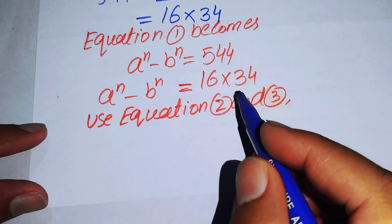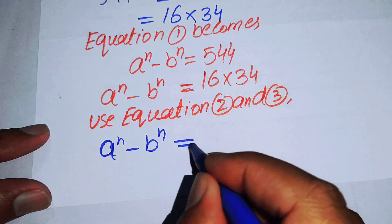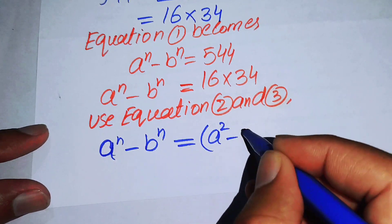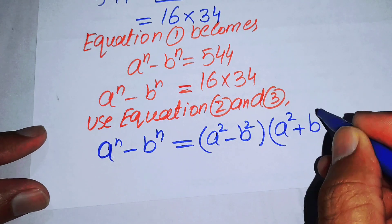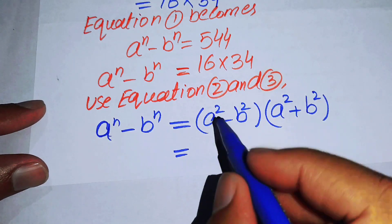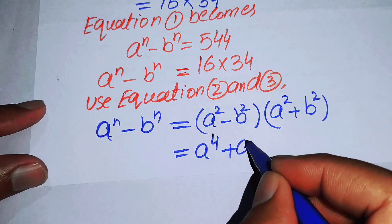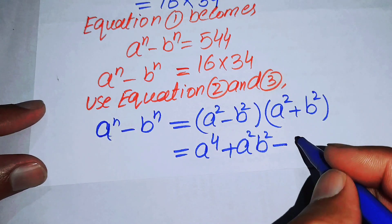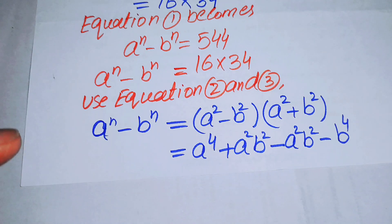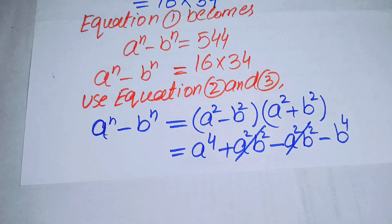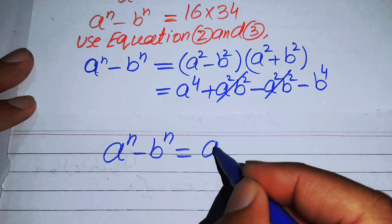Substituting, equation 1 becomes: a^n minus b^n equals (a² minus b²)(a² plus b²). Expanding this product: a² times a² gives a⁴, the cross terms a²b² and a²b² cancel each other, and b² times b² gives b⁴. So we obtain a^n minus b^n equals a⁴ minus b⁴.